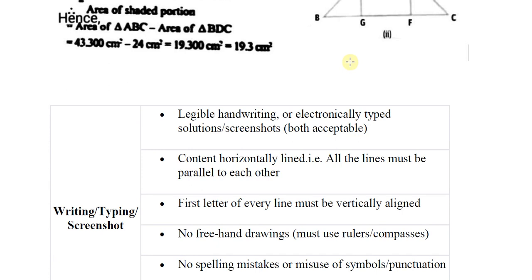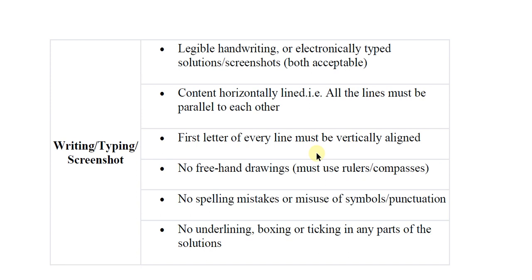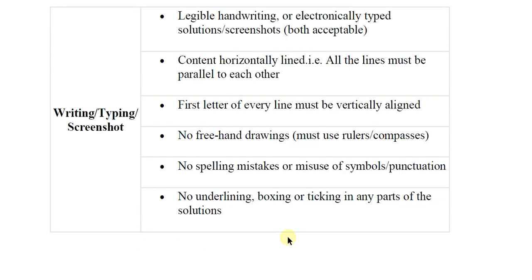Looking at writing, typing, or screenshot samples: a legible handwritten or typed or screenshot solution is acceptable if the answer is conceptually correct — both categories must be accepted. Reject unreadable handwriting — if you cannot read the handwriting at all, obviously reject it. Also reject if the first letter of every line is not vertically aligned — if the producer has written in a random, haphazard manner without correct alignment, reject it.